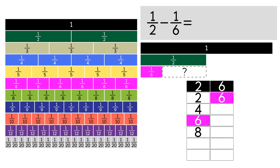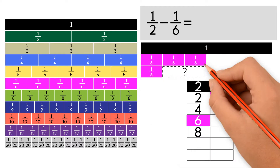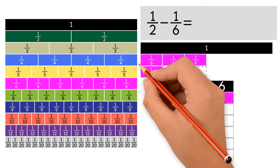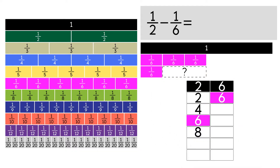So we're going to use the fraction strips with 6 in the denominator. 3 strips of 1 sixth fit into 1 half, so 1 half equals 3 sixths. Now we can subtract. 3 over 6 minus 1 over 6 equals 2 over 6, which is equivalent to 1 third.